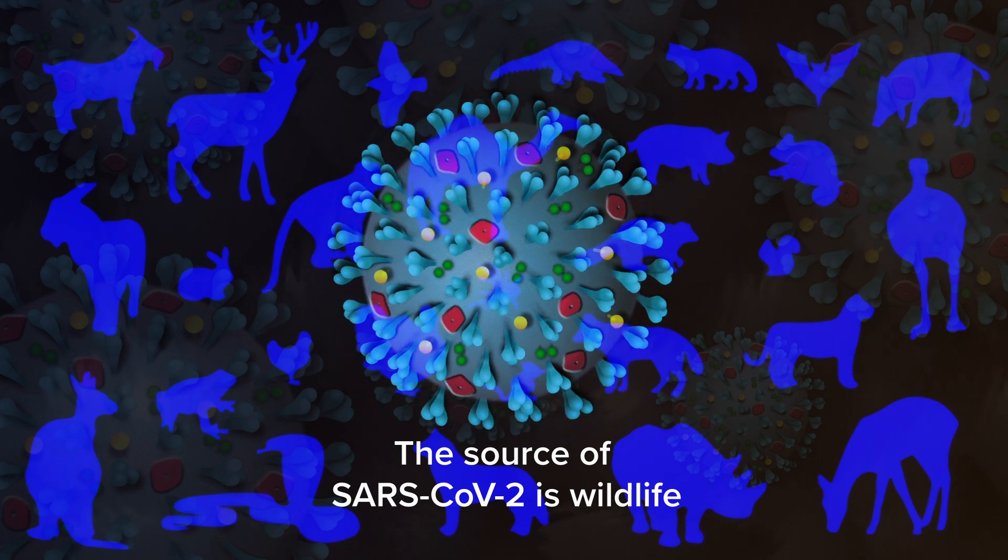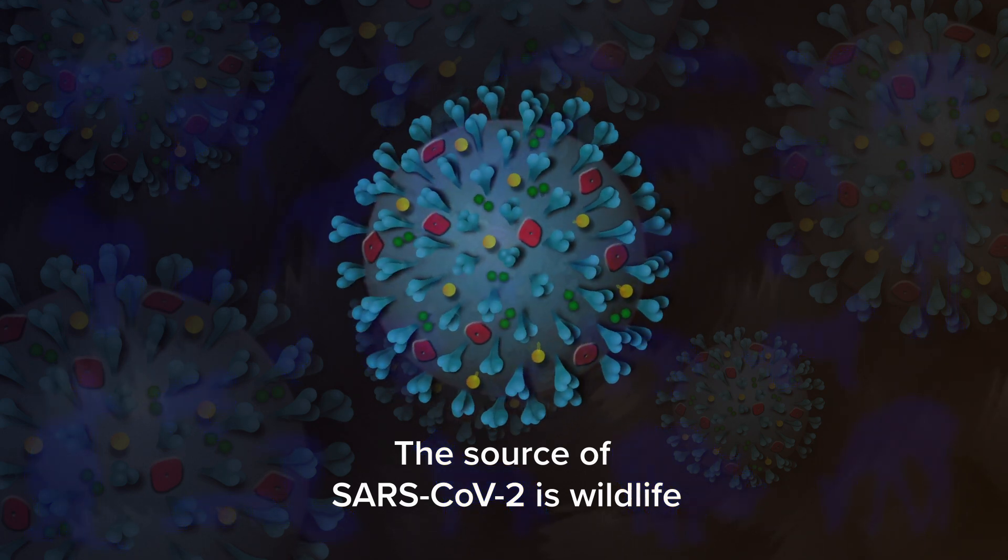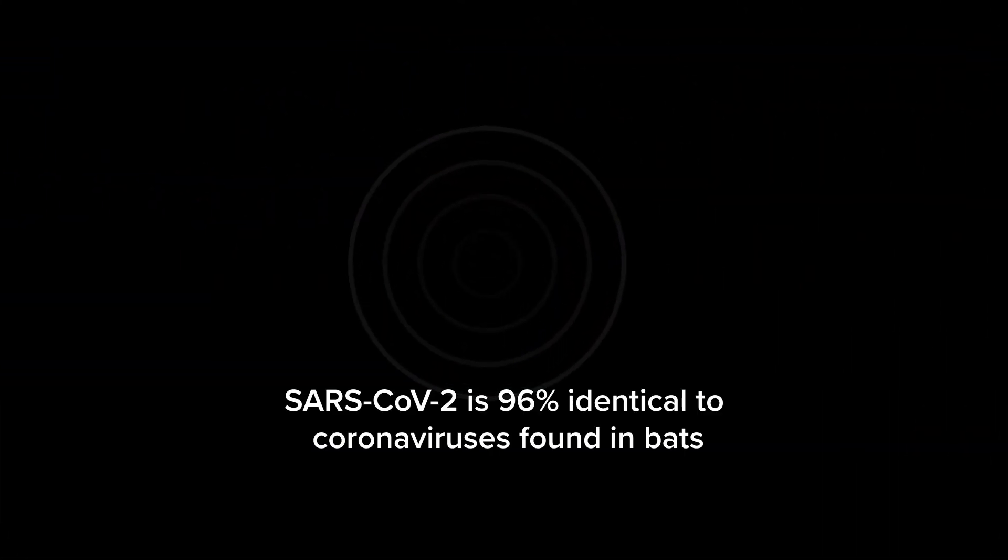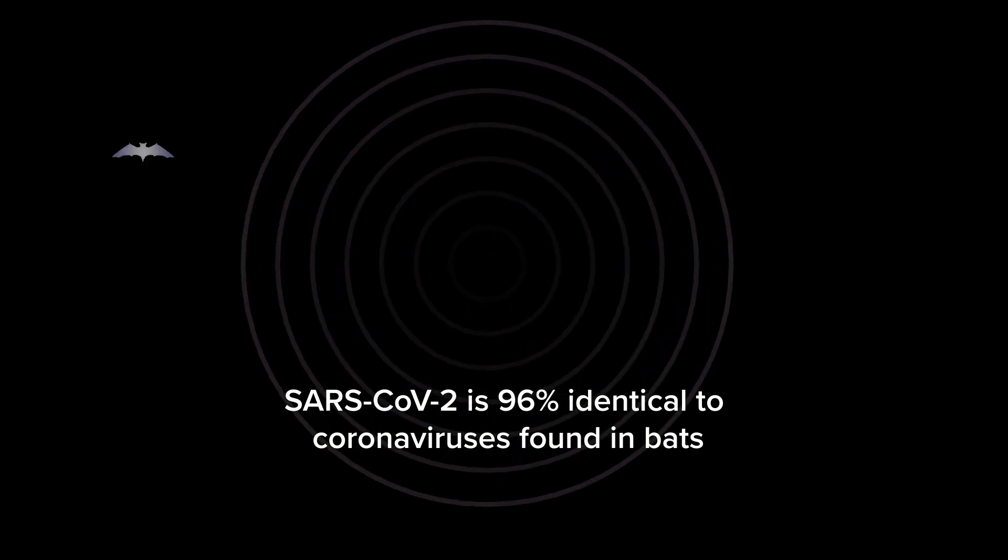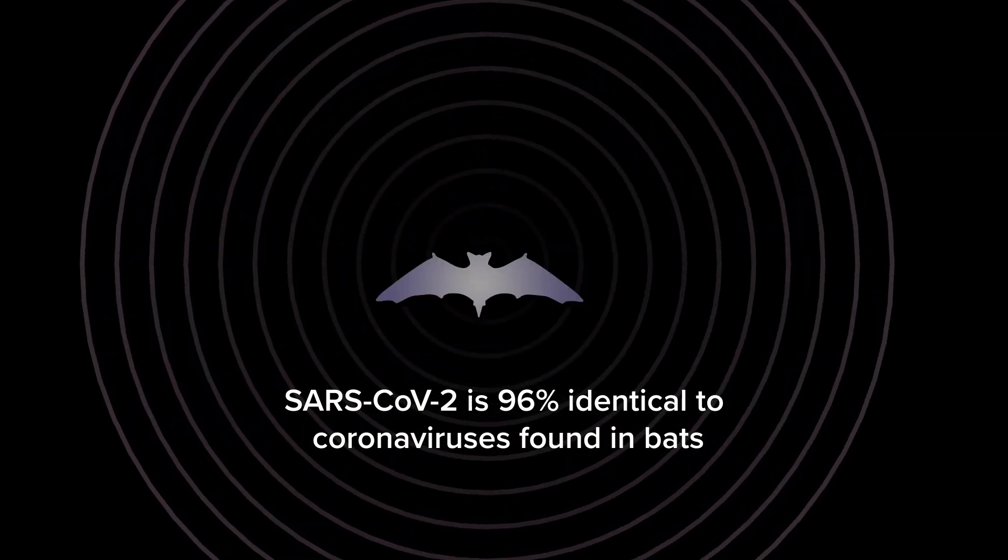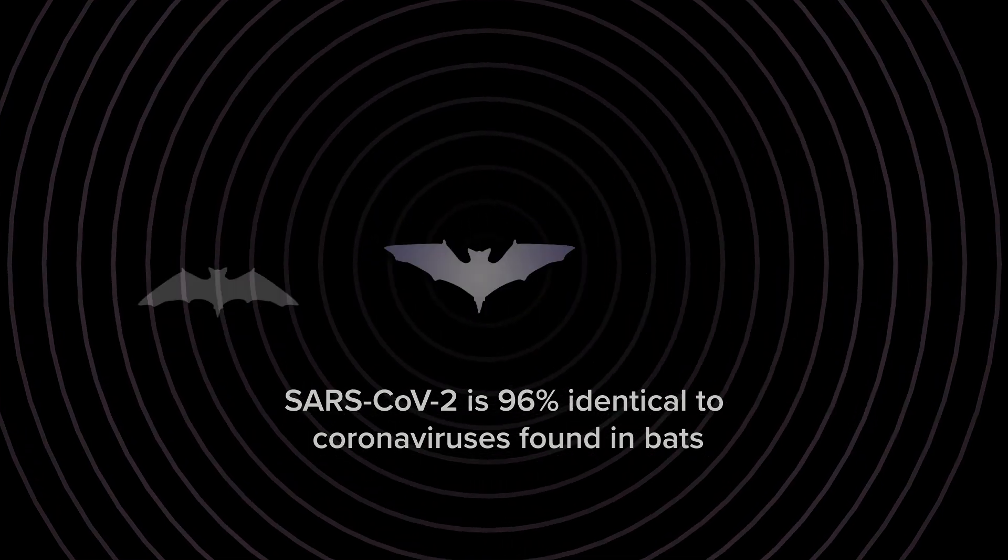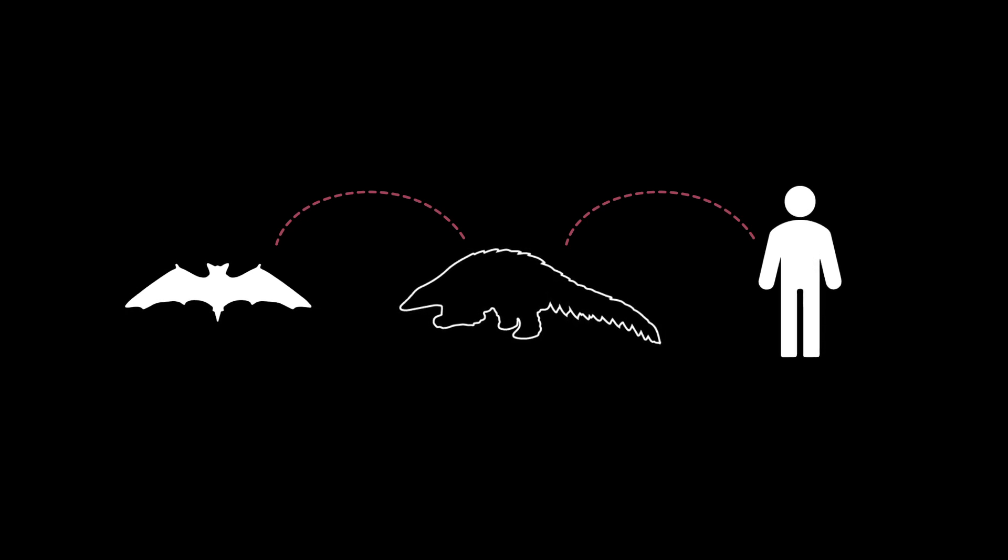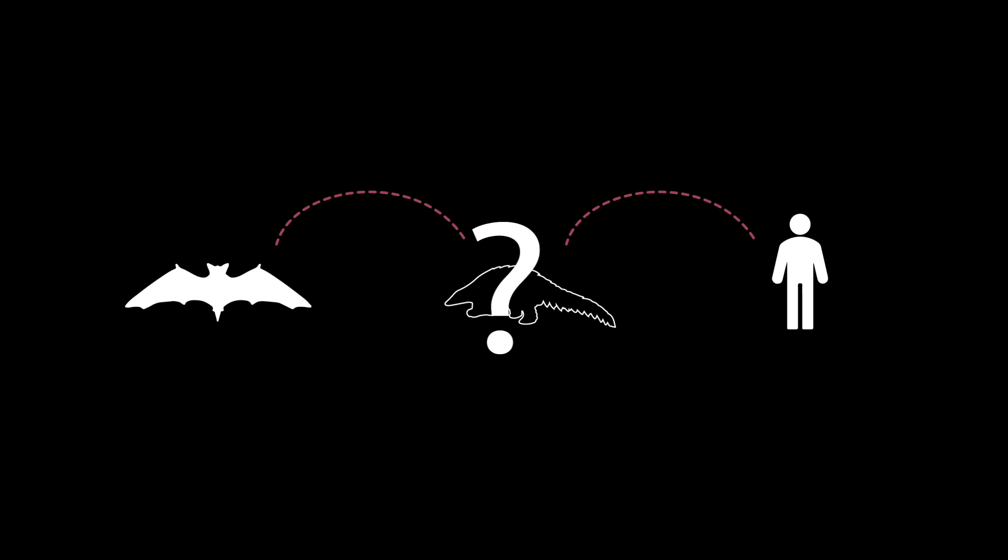The source of SARS-CoV-2 is wildlife, and its genome is 96% identical to coronaviruses found in bats. The crossover to humans likely occurred when the virus jumped from bats to other animals that were later sold in fresh meat markets, although exactly which animal has yet to be determined.